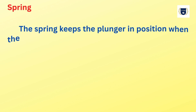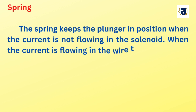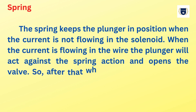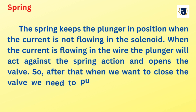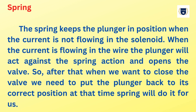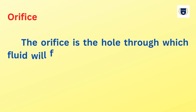Spring: the spring keeps the plunger in position when the current is not flowing in the solenoid. When the current is flowing in the wire, the plunger will act against the spring action and opens the valve. When we want to close the valve, we need to put the plunger back to its correct position, and the spring will do it for us.